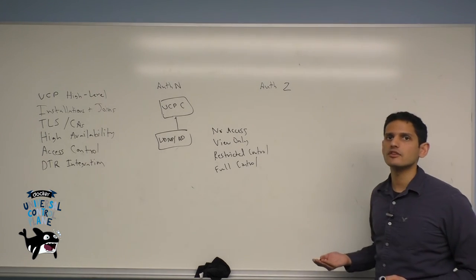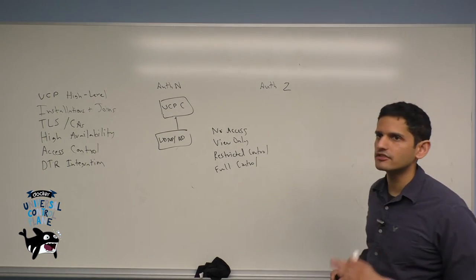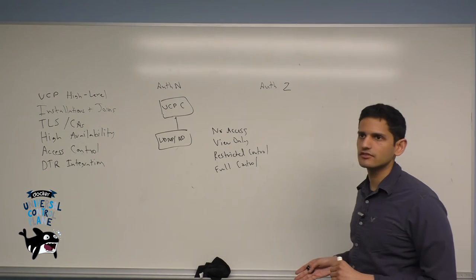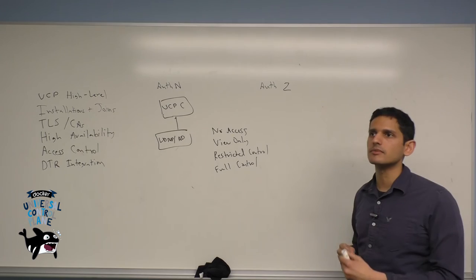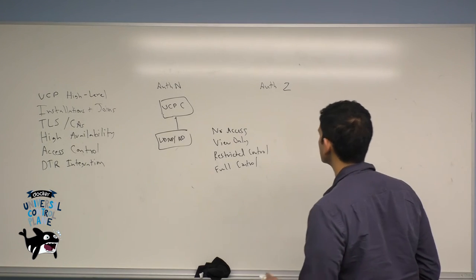Finally, no access means that by default you're not allowed to see any resources that you're not explicitly allowed to access. This might be appropriate in a blacklisting situation where you only want to provide specific resources to a given user at any time.